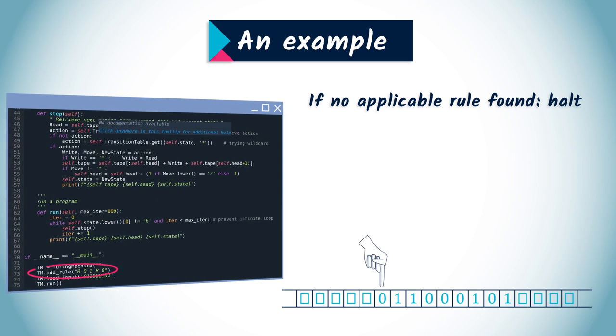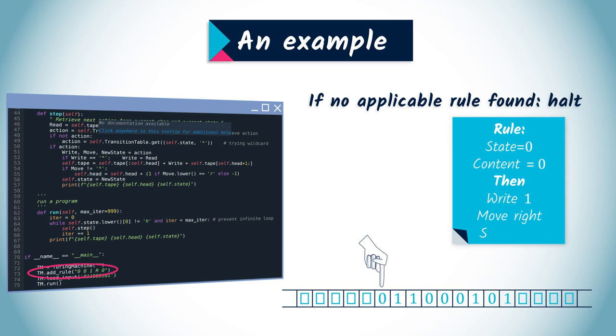What if we add a new rule? Say, for instance, that in state 0, a 0 will be transformed into a 1 and the machine moves to the right, staying in state 0. This can be written as follows.